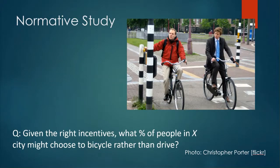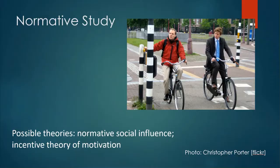Our second study is a normative study, and it asks: given the right incentives, what percentage of people in this city might choose to bicycle to work rather than drive? The normativeness of the study is that it assumes it is a good thing to reduce the number of people driving to work alone and to increase bicycle use — thereby reducing air pollution and traffic congestion. Possible normative theories could include normative social influence, which examines how our need for association and community might lead us to change our behaviors toward those more widely shared for a common good. It may also use the incentive theory of motivation, which explores what rewards or incentives people need in order to make a behavioral change.